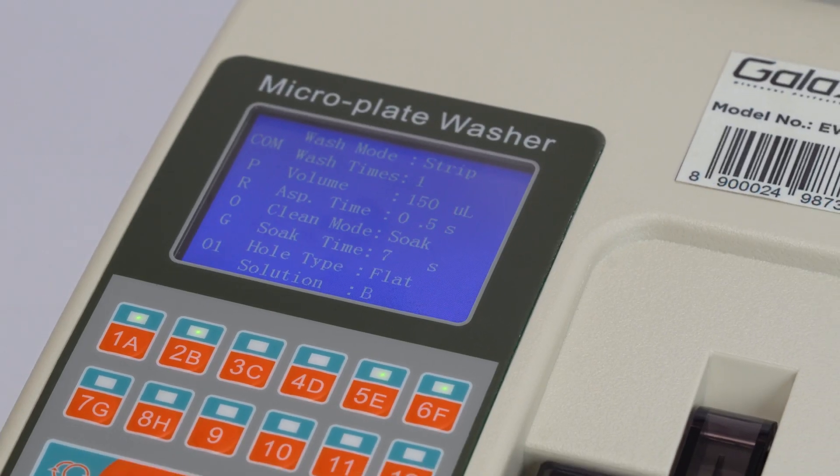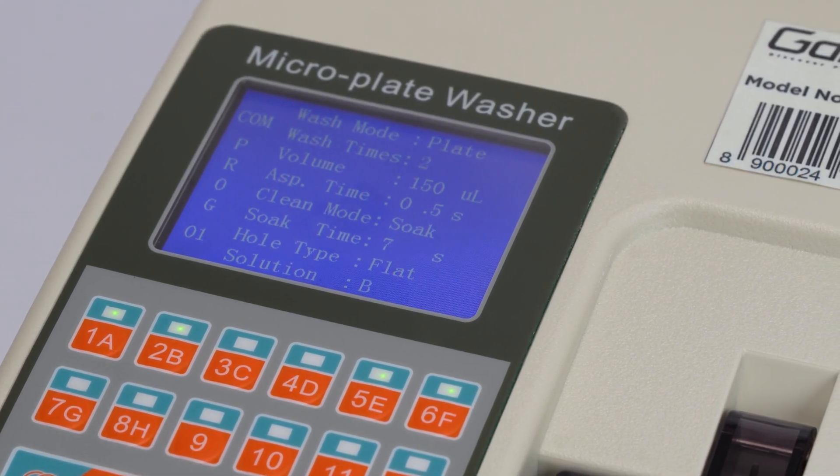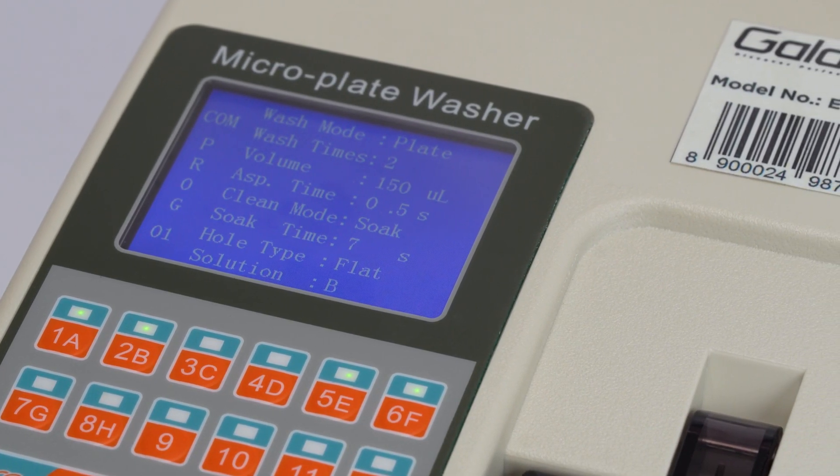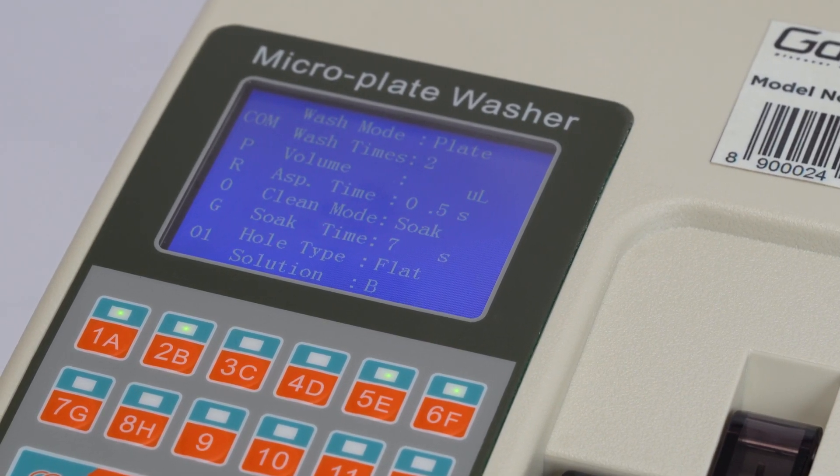Configure the washing program, washing mode, and strip plate settings. Set washing times from 1 to 99 selectable. Choose dispensing volume from 50 to 950 microliters in 50 microliter increments.